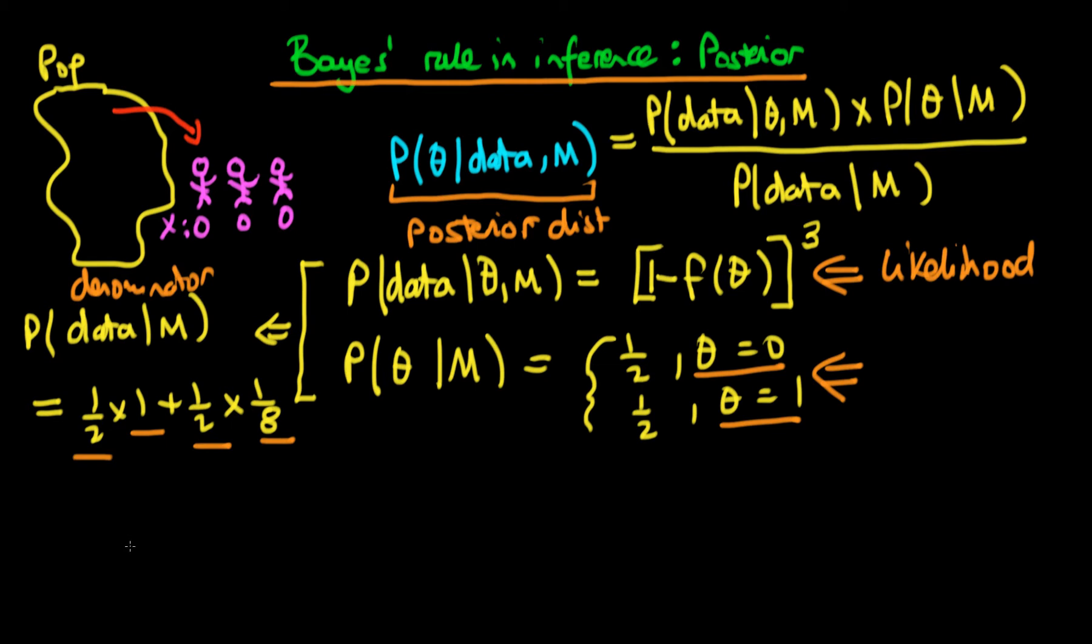So putting it all together, we can derive the posterior. I'm going to start off by deriving the probability that theta is equal to one, given our data and given our model choice. First of all, looking at the numerator of this expression, we need to take the likelihood, which in this circumstance we know is just one-eighth,